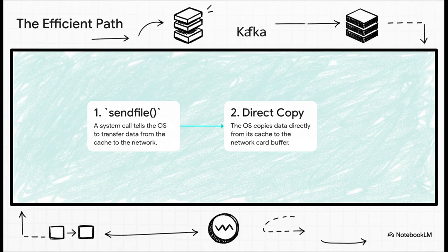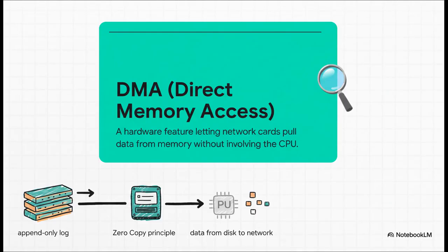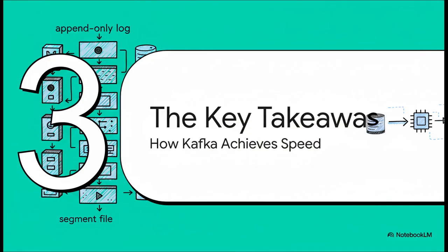It's clean, simple, and brutally efficient. And believe it or not, it gets even better. This one final copy is often handled by a special piece of hardware magic called DMA, or direct memory access. This lets the network card itself pull the data directly from memory without bothering the CPU at all. The main processor is completely free to go and do other important work. It's the final optimization that makes Kafka's data pipeline just so incredibly efficient.